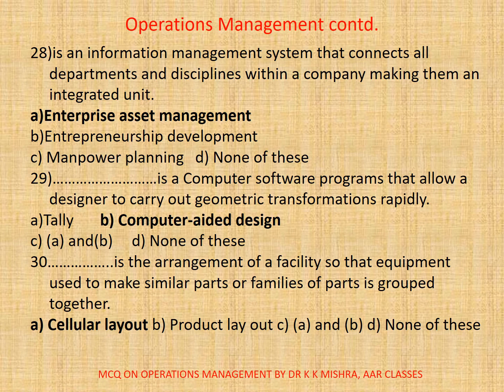30. Dash is the arrangement of a facility so that equipment used to make similar parts or a family of parts is grouped together. A. Cellular layout. B. Product layout. C. A and B. D. None. The correct option is A. Cellular layout.